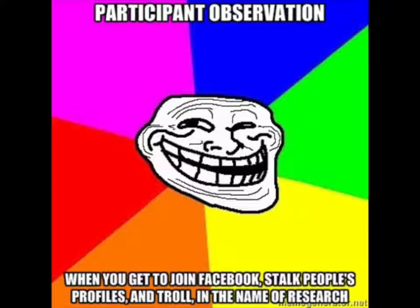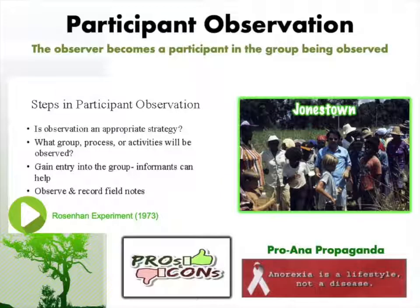Research questions suited for participant observation include: What goes on inside a prison, a sorority, an AA meeting, a cult like Jonestown, a gang, or a mental hospital? This method is generally used when studying existing groups of people living a certain way, especially populations not interested in being measured. Gang members, for instance, might not want to contribute to scientific knowledge on gangs, making covert participant observation appropriate.